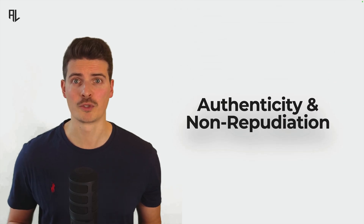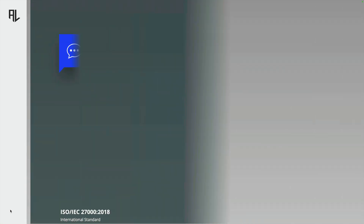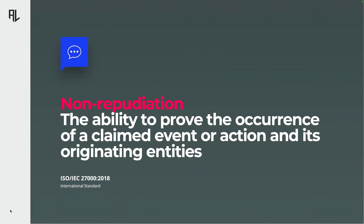Now let's move on to non-repudiation. The official definition is not easy to understand, so let me clear things up for you. Non-repudiation goes hand in hand with authenticity, but it adds an extra layer of assurance. Non-repudiation ensures that the sender of a message or file cannot deny having sent it. It means that once someone sends a piece of data, they cannot later claim that they didn't send it, even if they want to.